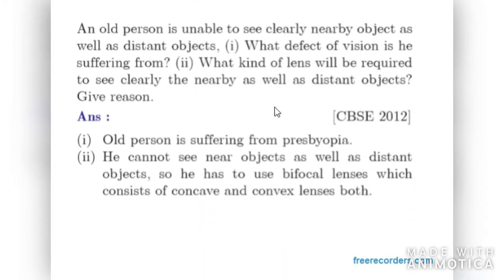Moving on to next. An old person is unable to see clearly nearby objects as well as distant objects. What defect of vision is he suffering from? This is presbyopia, as he is not able to see the nearby objects as well as distant objects. What kind of lens will be required to see clearly the nearby as well as distant objects? He needs a bifocal lens which consists of concave and convex lenses both.